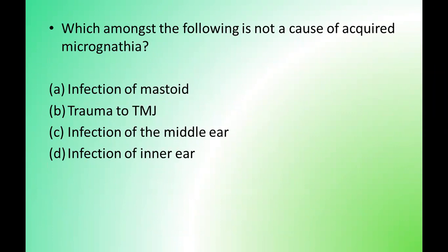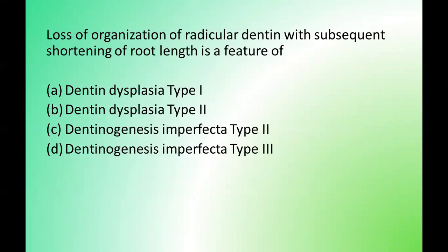First question: which amongst the following is NOT a cause of acquired micrognathia? Options are: infection of mastoid, trauma to TMJ, infection of middle ear, infection of ear area. The correct answer is option D — infection of ear area.